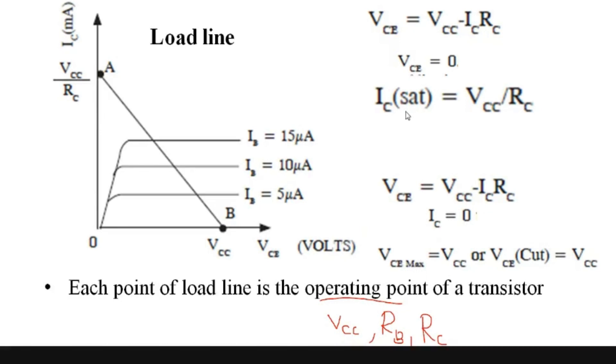So your saturation Ic becomes Vcc divided by Rc. Here I am making my Vce as zero, so Vcc is equal to Ic*Rc, from which what is Ic? Ic is nothing but Vcc by Rc.